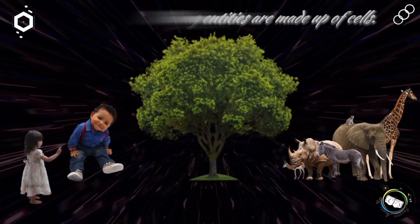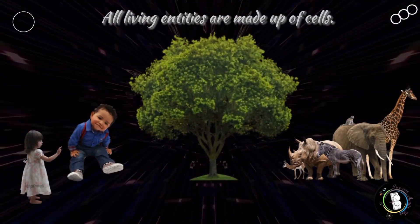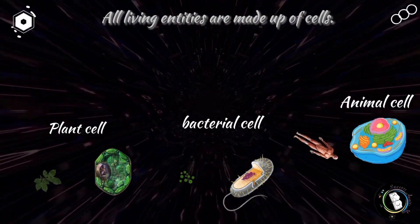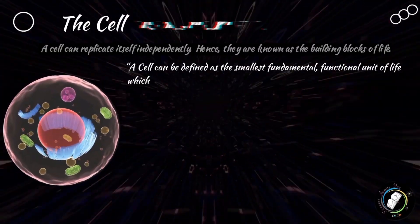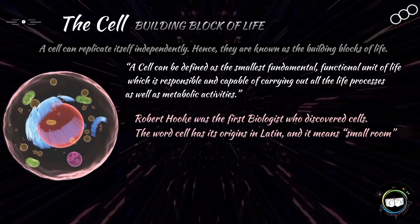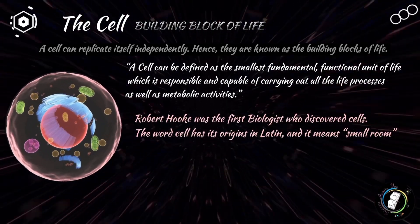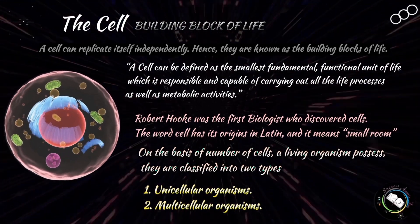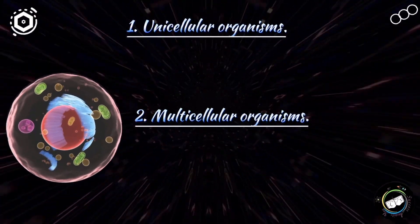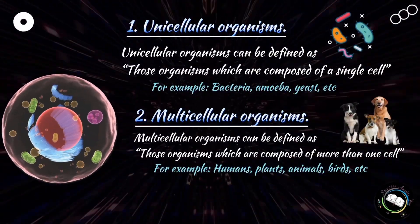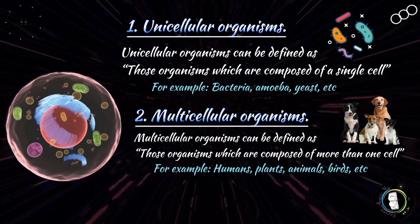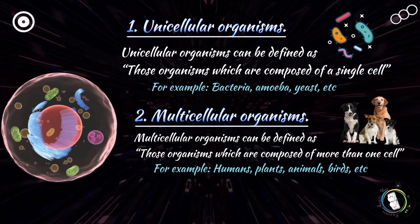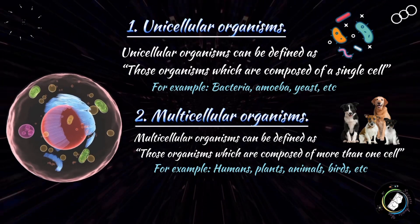As we have studied the features of living things, one of them is that all living things are made up of cells. Cell is a basic, structural, and functional unit of life. An organism may have single or multiple cells. Unicellular organisms are made up of a single cell, while multicellular organisms have many cells to perform life processes.